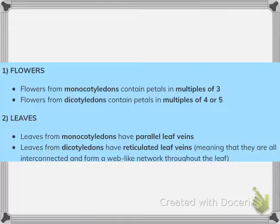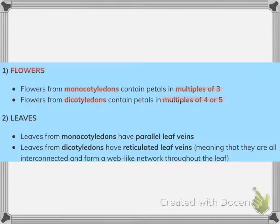Monocotyledon flowers have petals in multiples of three, so six petals. Dicotyledon flowers have petals in multiples of four or five, so eight or ten petals. For leaves, monocotyledons have parallel leaf veins, while dicotyledons have reticulated leaf veins, meaning they are all interconnected.